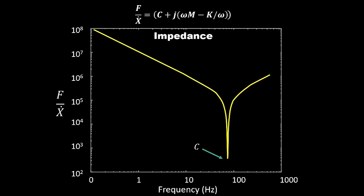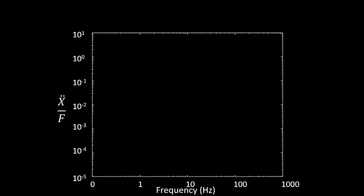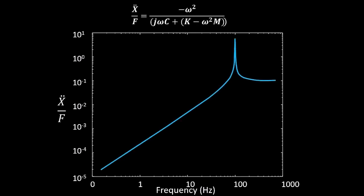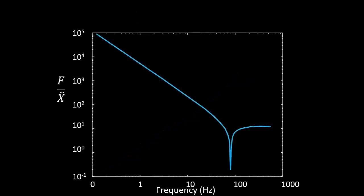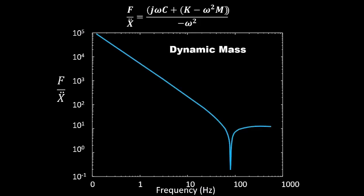If we take the derivative again — maybe we measured acceleration, which is very common with accelerometers — we now have ẍ over F on the axis. All I've done from the previous step is multiply by an additional jω term. This plot is called accelerance. If we flip it upside down, we have force over acceleration — this is called dynamic mass. The straight flat line at the end in the mass controlled zone is where we can pick out that mass value.